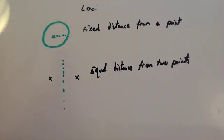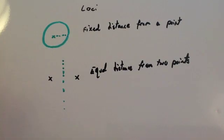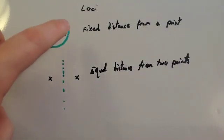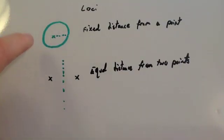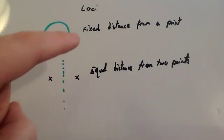In maths, the word loci means a position, a place, or a point. You're going to be given certain questions and you've got to find the particular regions or points where the set of rules define where it's going to have to be. For instance, if I had a fixed point — say a tree — and I said a man was standing three metres away from a tree, he could be anywhere on this circle. So if you've got a fixed distance from a point, you'll have a circle.